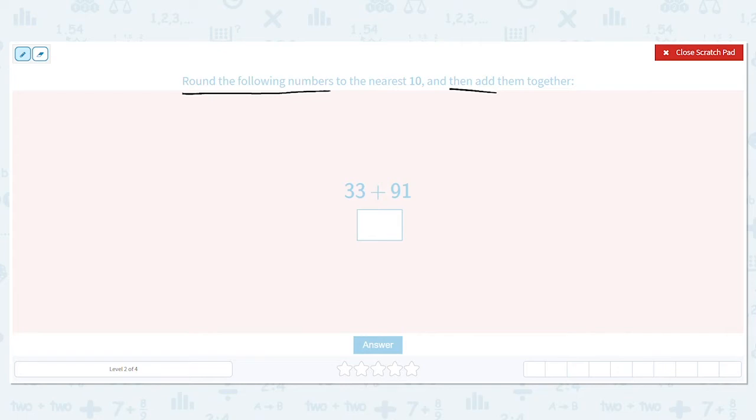So if I round 33 to the nearest ten, meaning 10, 20, 30, 40, and so on, what is it closest to? Does 33 round to 30 or to 40? It rounds to 30. And how about 91? Does 91 round to 90 or does it round to 100? It rounds to 90. Then I can add. I know 0 plus 0 is 0, and then I can do 3 plus 9 is 12. So my estimate is 120.